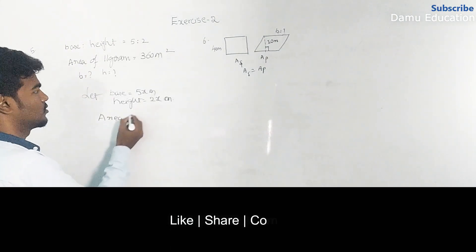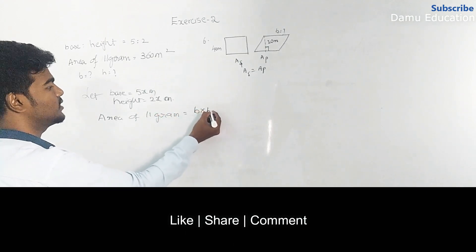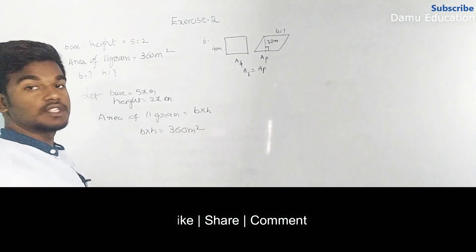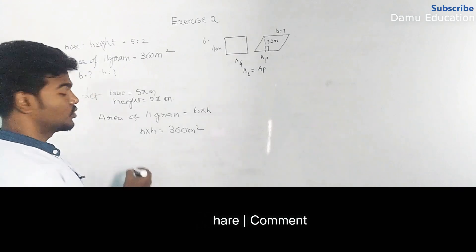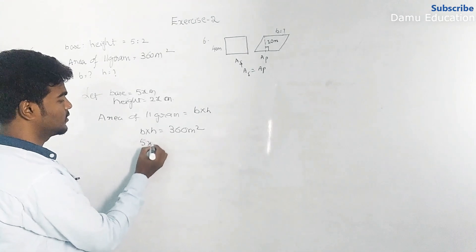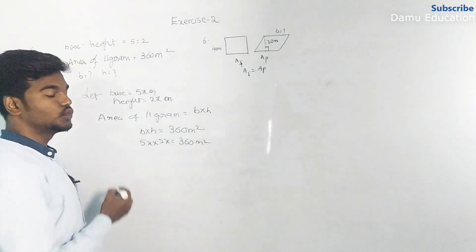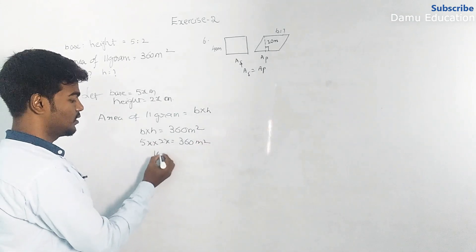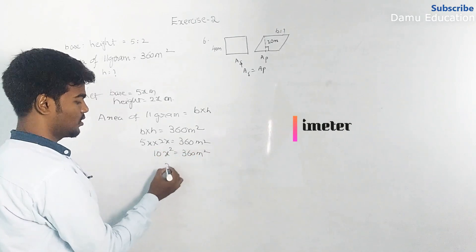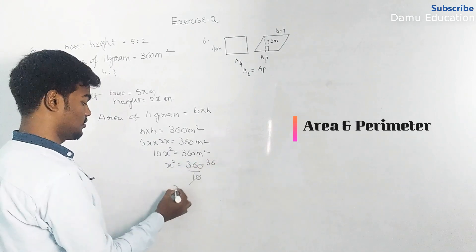The area of a parallelogram equals base into height. So base into height equals 360 square meters. Substituting: 5x into 2x equals 10x² equals 360 square meters. Therefore x² equals 360 divided by 10, which gives x² equals 36 square meters.